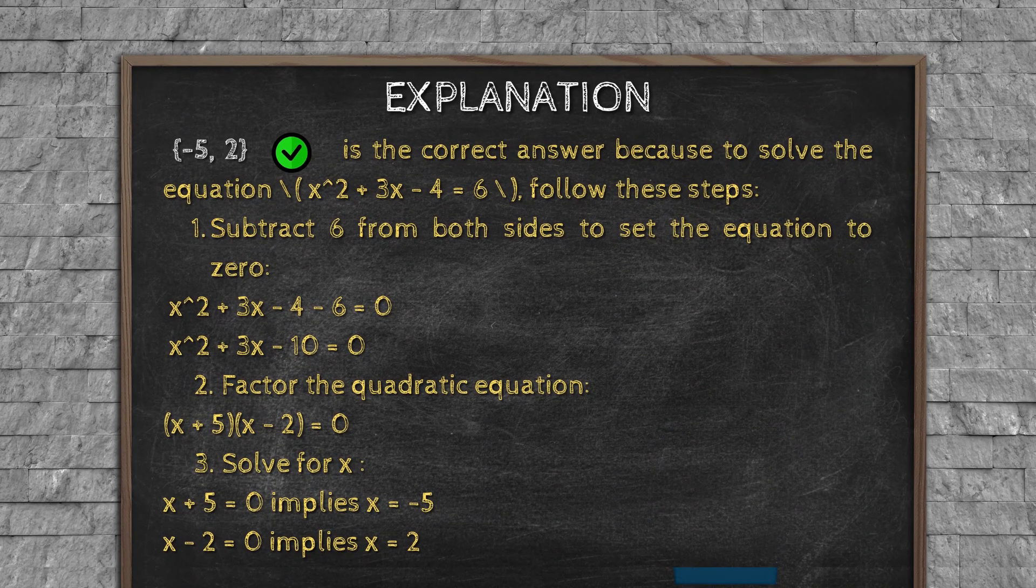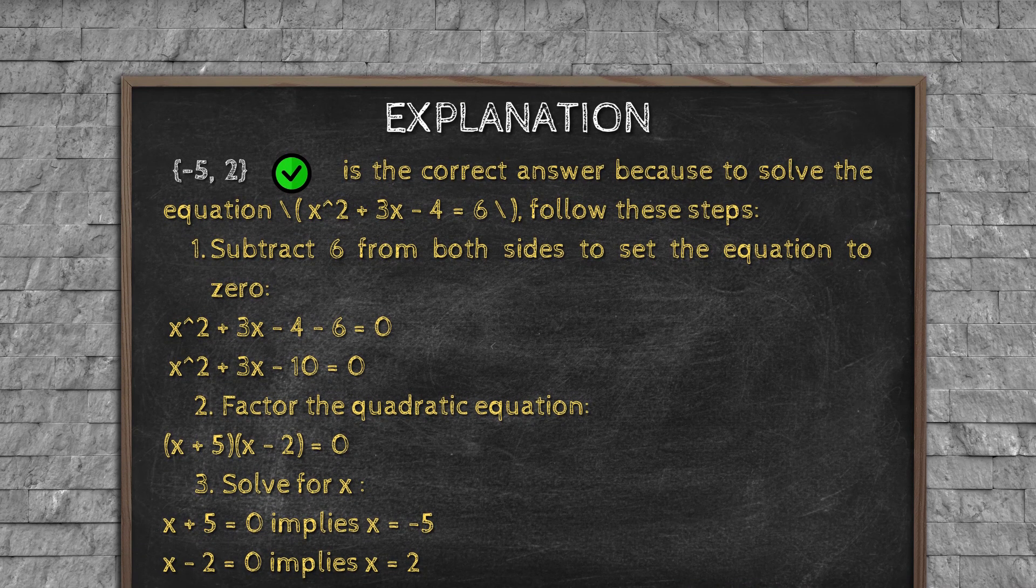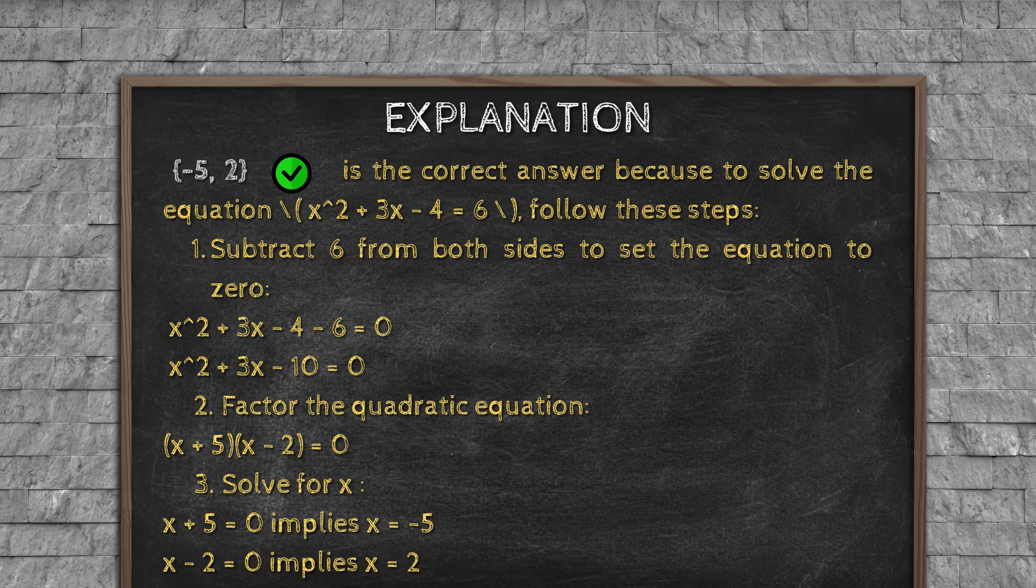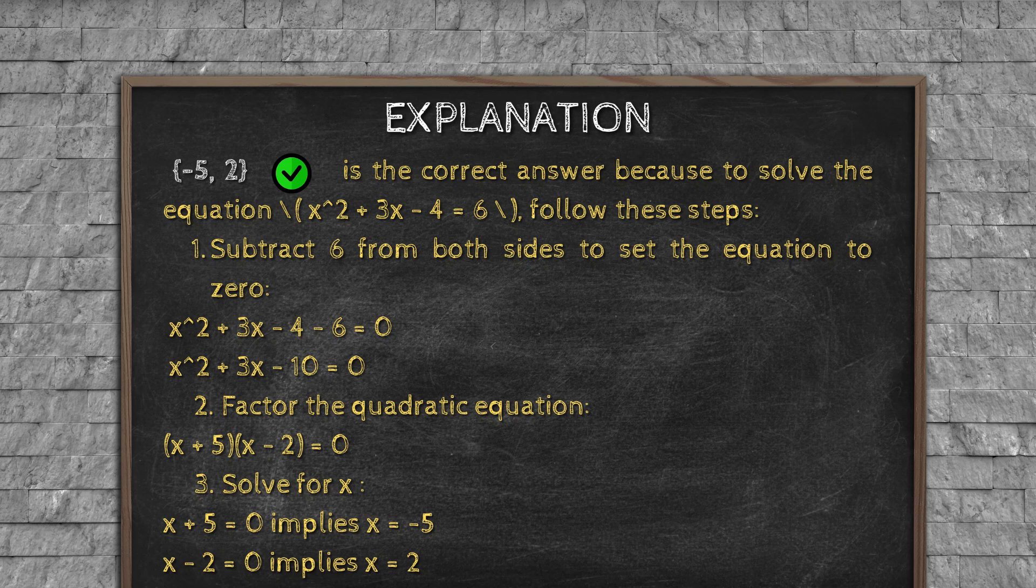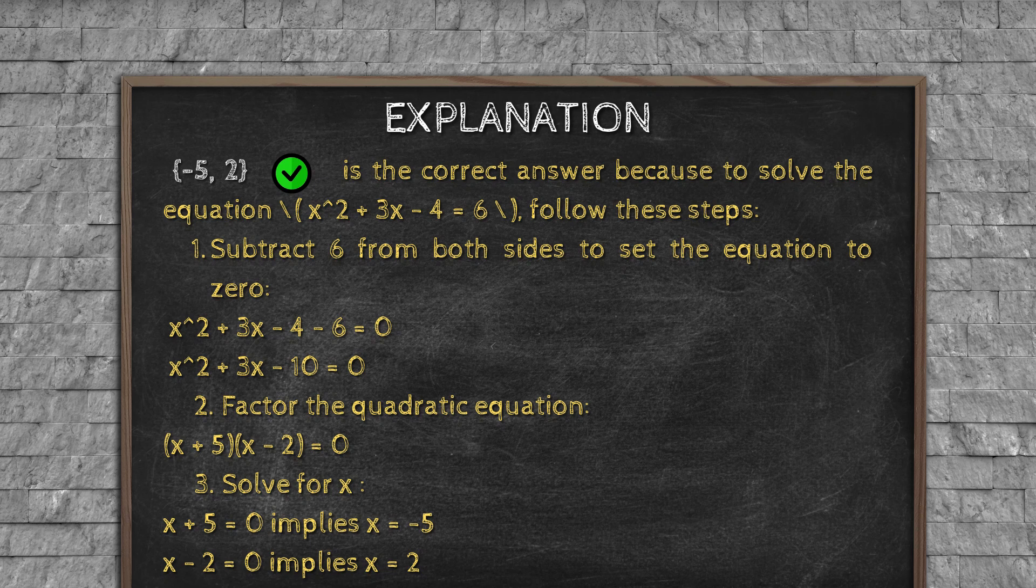Explanation: {-5, 2} is the correct answer, because to solve the equation x² + 3x - 4 = 6, follow these steps. 1. Subtract 6 from both sides to set the equation to 0: x² + 3x - 4 - 6 = 0, x² + 3x - 10 = 0. 2. Factor the quadratic equation: (x + 5)(x - 2) = 0. 3. Solve for x: x + 5 = 0 implies x = -5. x - 2 = 0 implies x = 2.